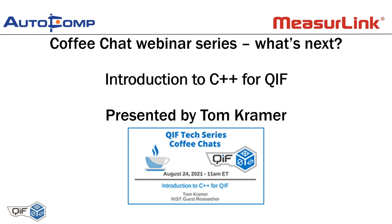Question: can Autocomp return calculated compensation data back to MeasureLink, thinking about data storage? Autocomp does create, out of the box, a CSV file that stores the entire compensation history and measurement data for every feature processed within Autocomp. MeasureLink has the ability to import really any ASCII file, including CSV, so if there's a reason to import that information it could be possible — though it probably needs a little more clarification of exactly what data you would like transferred from Autocomp back into MeasureLink.